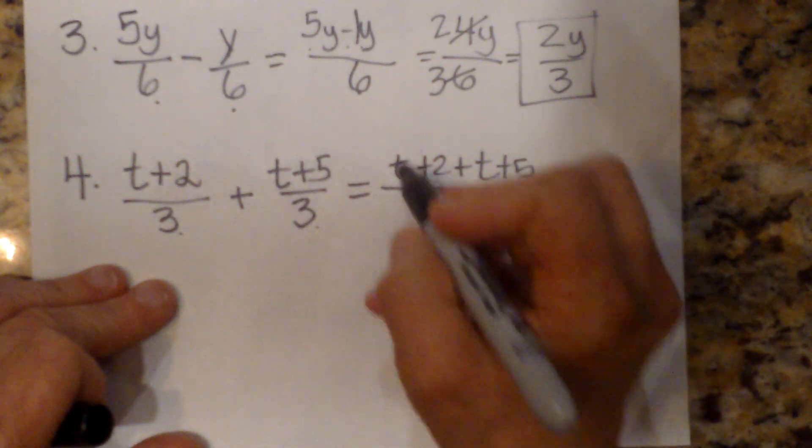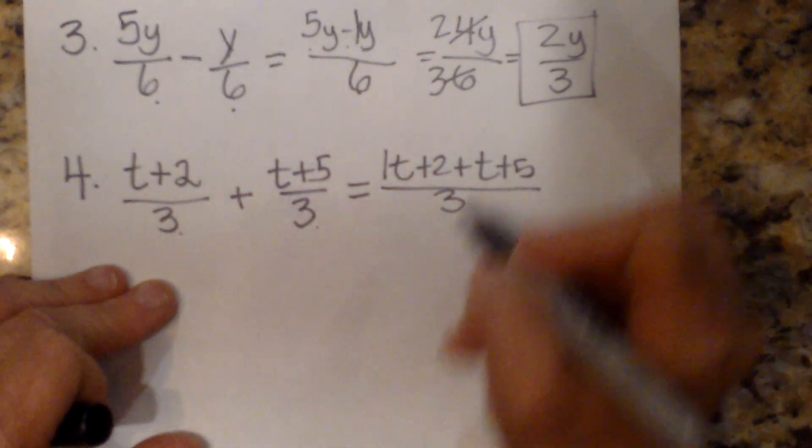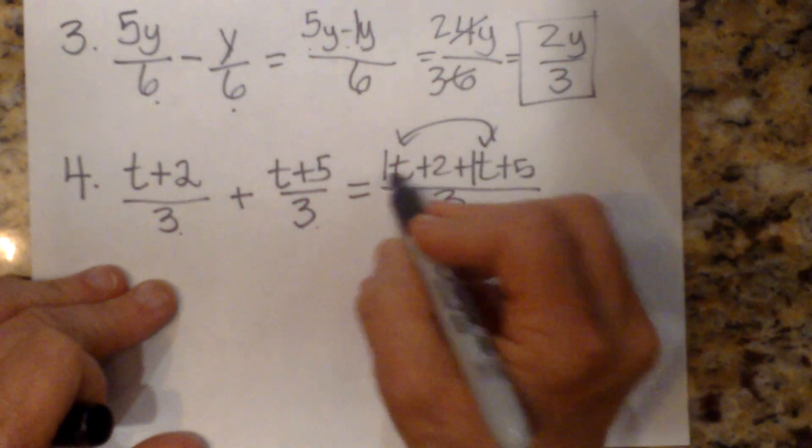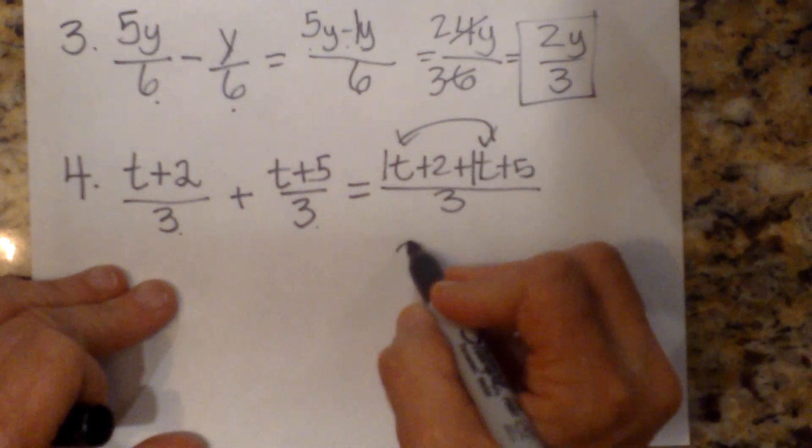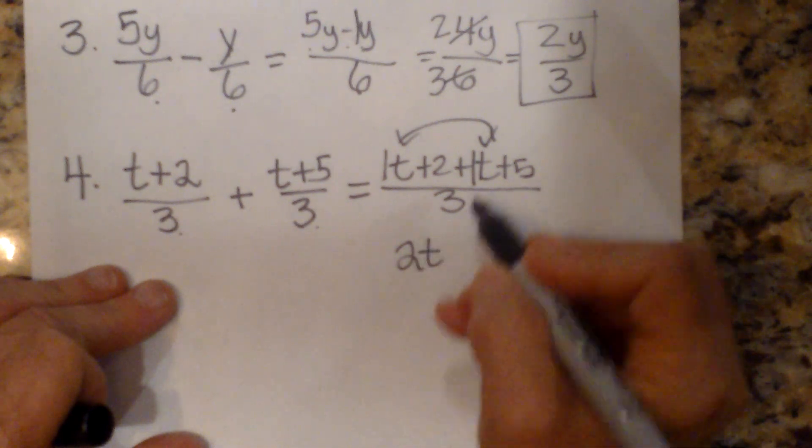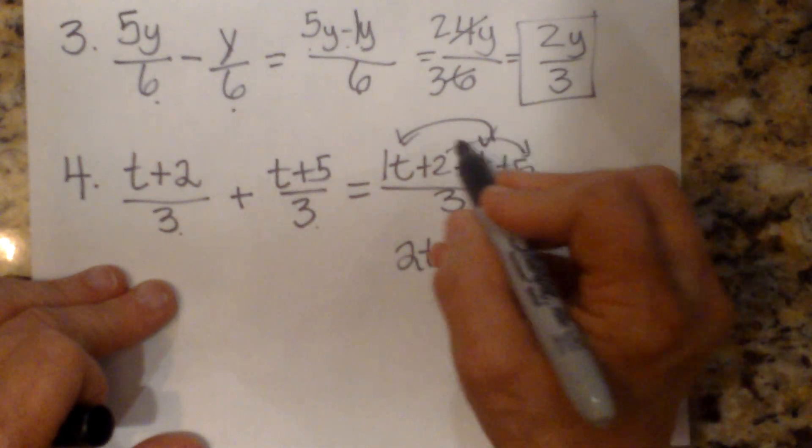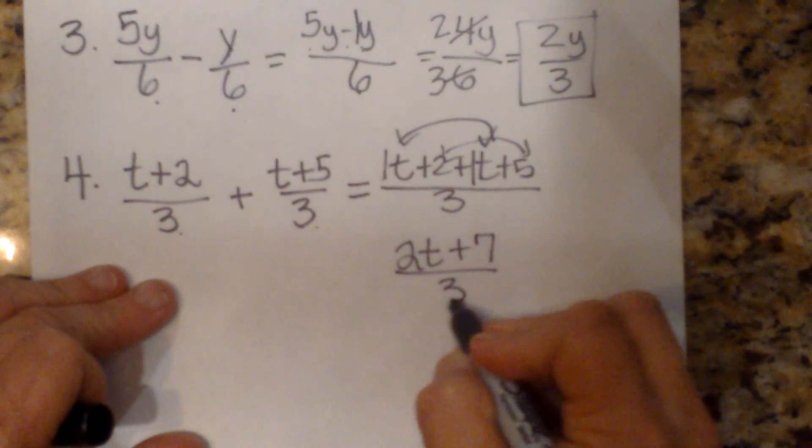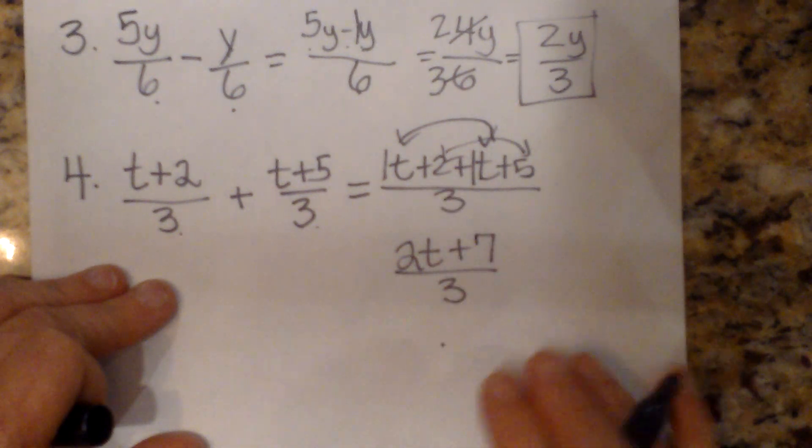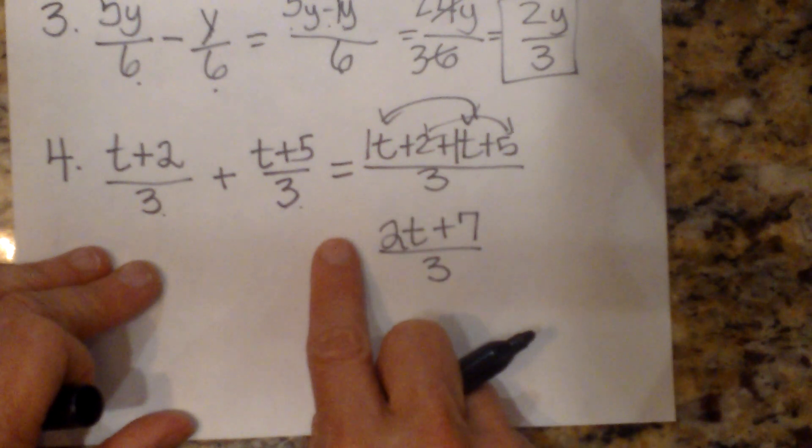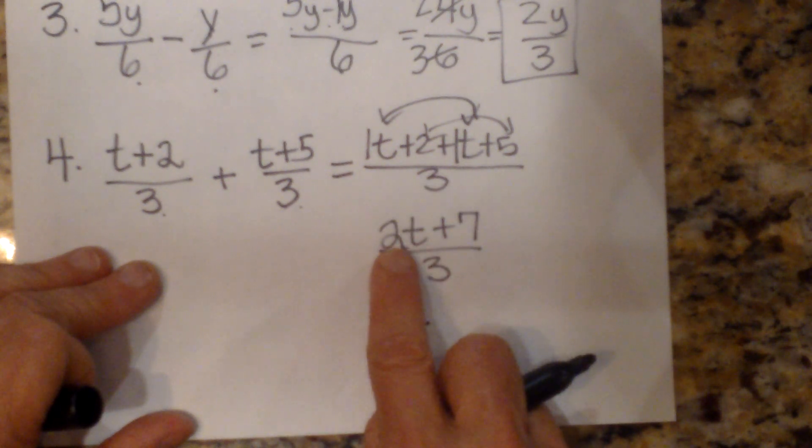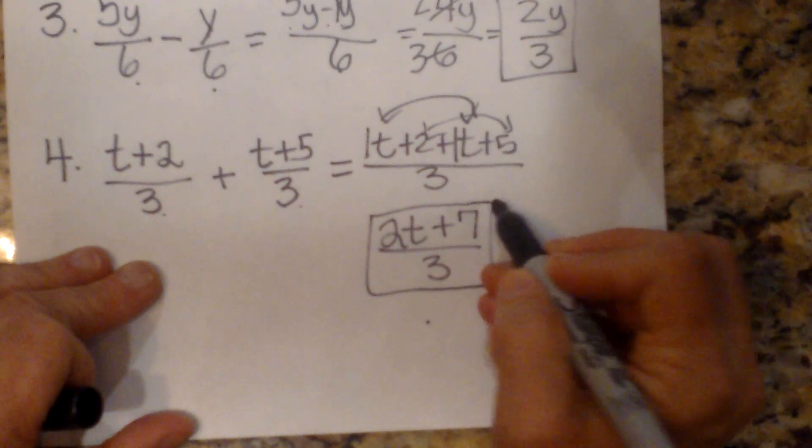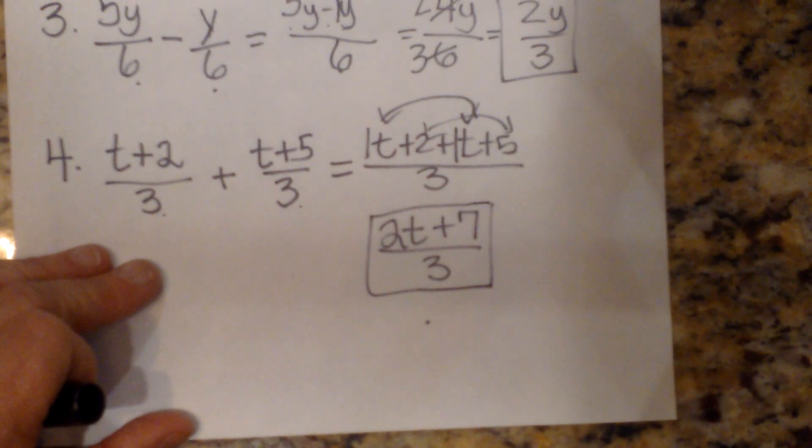Now, what do we get when we have a 1t and a 1t? These are the like terms. So we're going to add a 1t and a 1t to 2t. And we're going to add the 2 and the 5 to 7. And then just bring our common denominator with it. So our final answer would be 2t plus 7 all over 3. And there is our final answer. Hope this video was helpful.